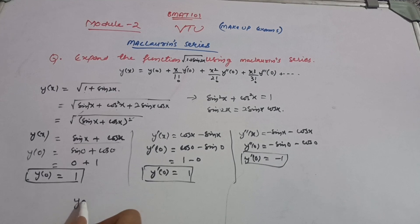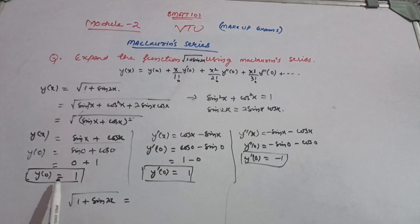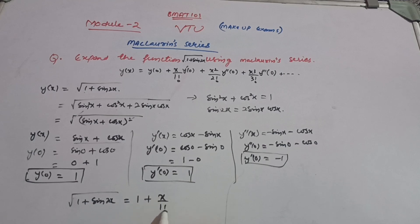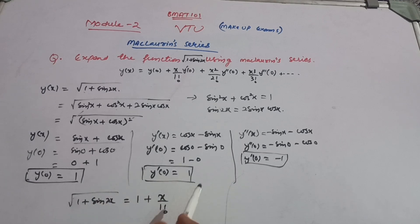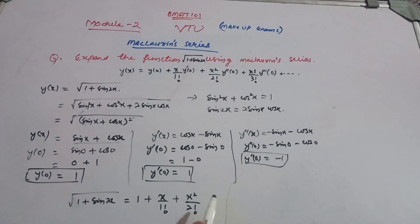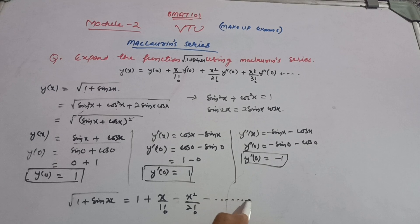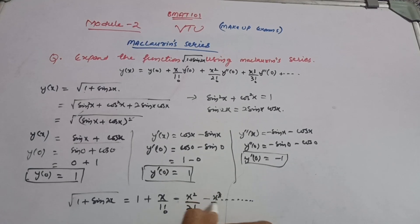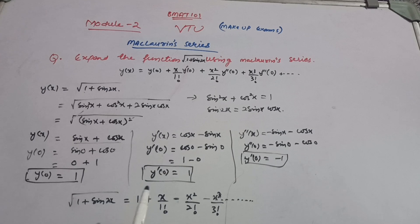Now put these values into the Maclaren formula. y(x) = √(1 + sin 2x) = 1 + x/1! · 1 + x²/2! · (−1) + x³/3! + ... This simplifies to 1 + x − x²/2! + x³/3! − ... and so on. This is your Maclaren series expansion for √(1 + sin 2x). Try three to four questions from this series to easily get seven marks. Thanks for watching my video.